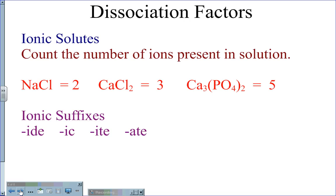To find the dissociation factors, we have two ways. The first way is for ionic solutes. Ionic solutes are considered to be electrolytes, and for this case, you count the number of ions present in solution. For sodium chloride, NaCl, you get a sodium ion and a chlorine ion that will dissociate, giving a dissociation factor of 2. Calcium chloride, CaCl2, gives us 3: one calcium ion and two chlorine ions. Calcium phosphate will dissolve into 3 calciums and 2 phosphates, giving a dissociation factor of 5.